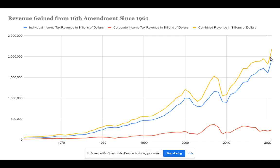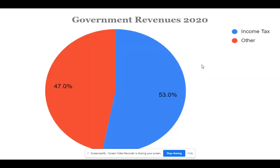Looking at these trends is important to me for two reasons. One is that income tax revenue has been increasingly used as a source for governmental revenue. Last year, income tax accounted for a majority of the revenue — 53%.